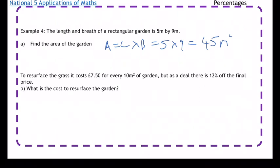To resurface the grass, it costs £7.50 for every 10 meters squared of garden, but there's a deal to get 12% off the final price. What does it cost to resurface the garden? First, we need to figure out how many 10 meters squared sections we've got. Because we're at 45, we actually need five of them.